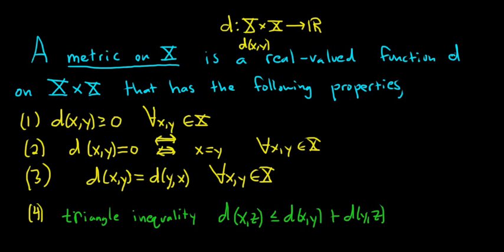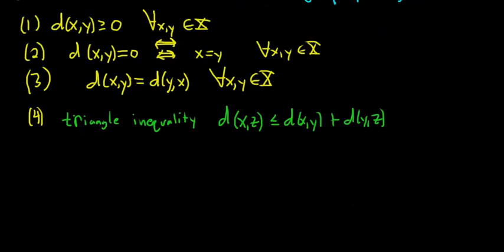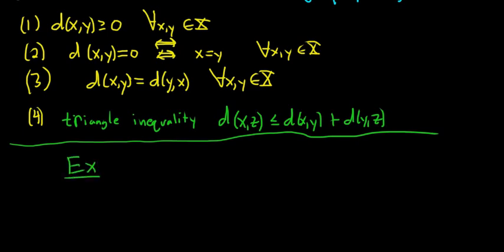Let's look at a few examples of metrics. There's a metric you've known your entire life if you know some math - the absolute value function. Example: Let X be the set of real numbers ℝ, and define d(x,y) = |x - y|.